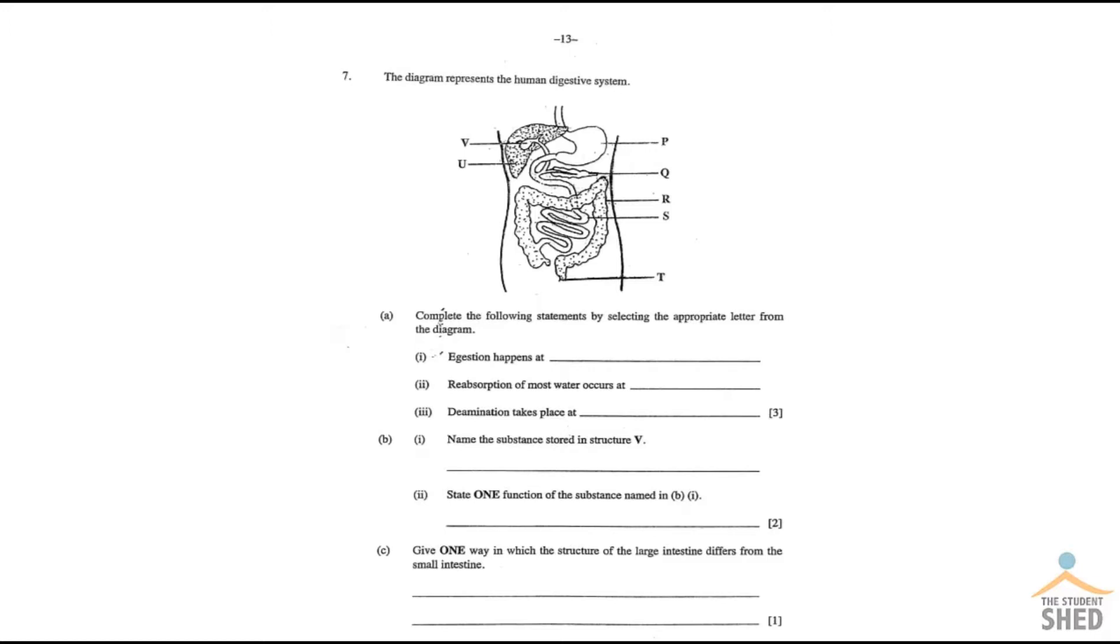Okay, like we said, this is a paper 2 so this is a structured questions paper. Now as you can see, what you've got in front of you here with this particular question is a schematic or picture of the human alimentary canal.